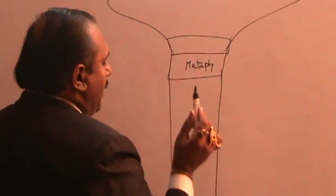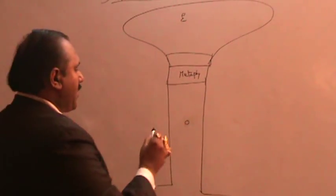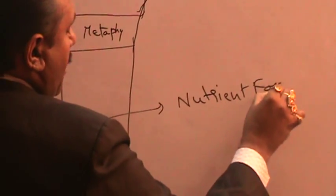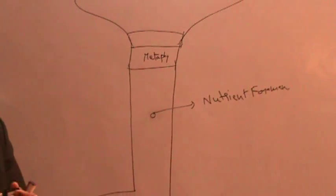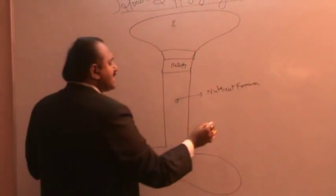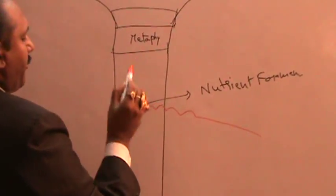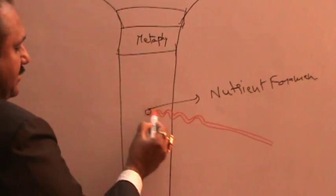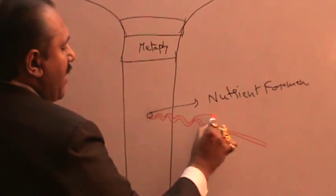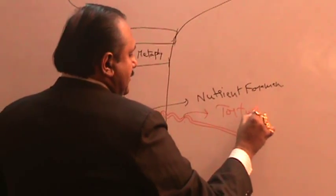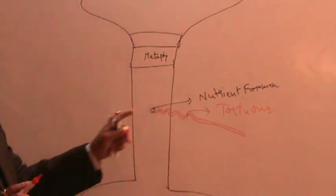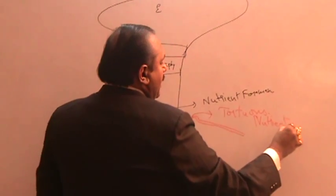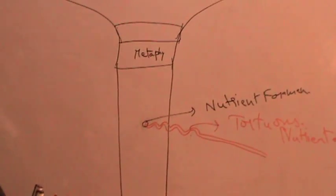Any long bone will have in its shaft one foramen, called the nutrient foramen. We have a single, large, tortuous nutrient artery — single, large in size, and tortuous, meaning it has a zigzag or wavy course. This is the nutrient artery entering into the nutrient foramen.